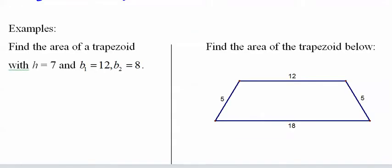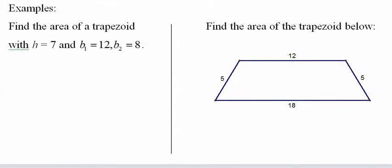So simple examples. Area of a trapezoid, very simple: one half height, 7, times 12 plus 8, equals 70.